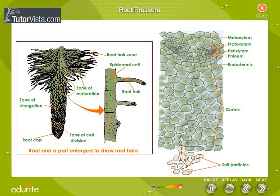Root pressure is thus explained as the pressure exerted on the liquid contents of the cortical cells of the root under fully turgid conditions, forcing a quantity of them into the xylem vessels and upwards into the stem up to a certain height. The gradient of water concentration that exists across the cortex creates a pushing force called root pressure.